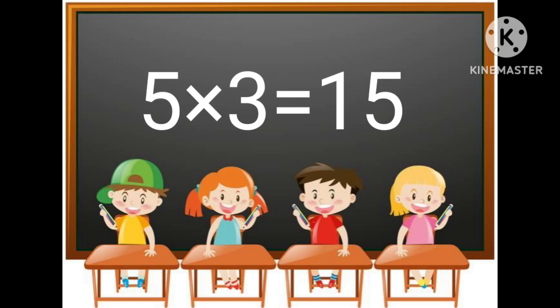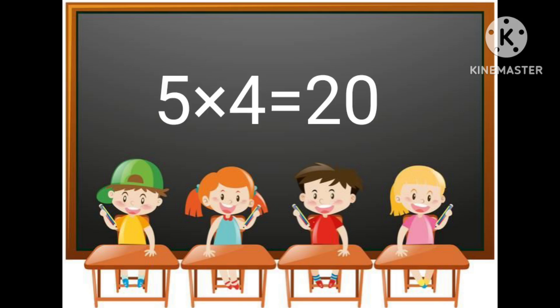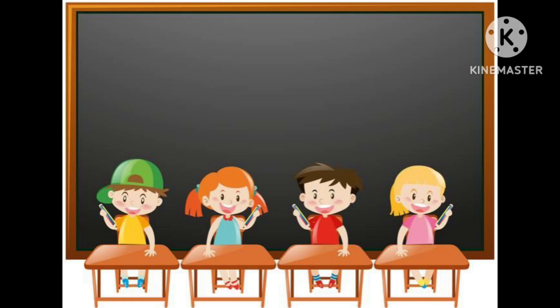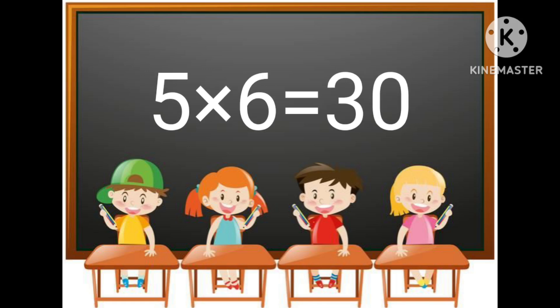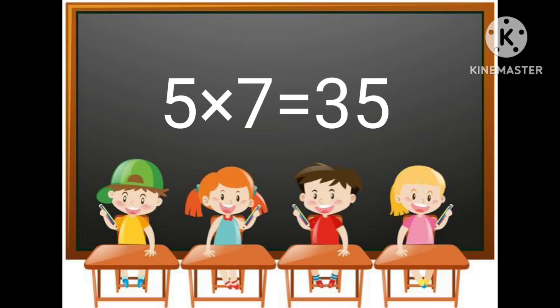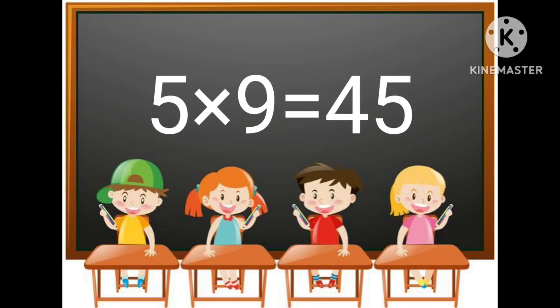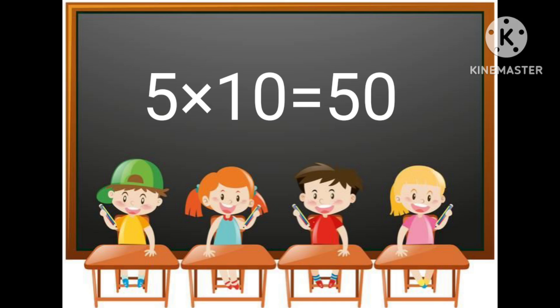5 multiplied by 3 is equal to 15. 5 multiplied by 4 is equal to 20. 5 multiplied by 5 is equal to 25. 5 multiplied by 6 is equal to 30. 5 multiplied by 7 is equal to 35. 5 multiplied by 8 is equal to 40. 5 multiplied by 9 is equal to 45. 5 multiplied by 10 is equal to 50.